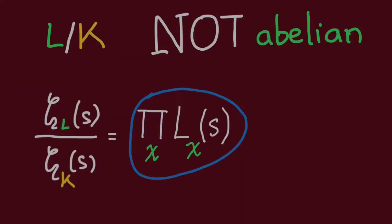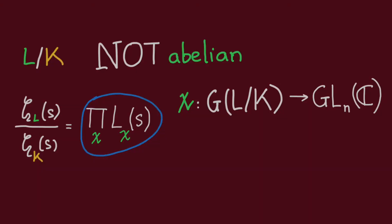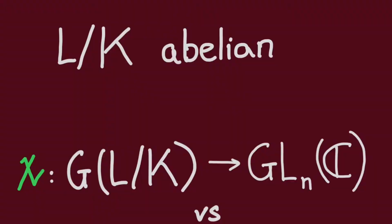Artin wants to generalize this to the case when L over K is not abelian. For that, he would need some new L functions. So he comes up with a new definition of L function using representations of the Galois group instead of characters on the generalized ideal class group.